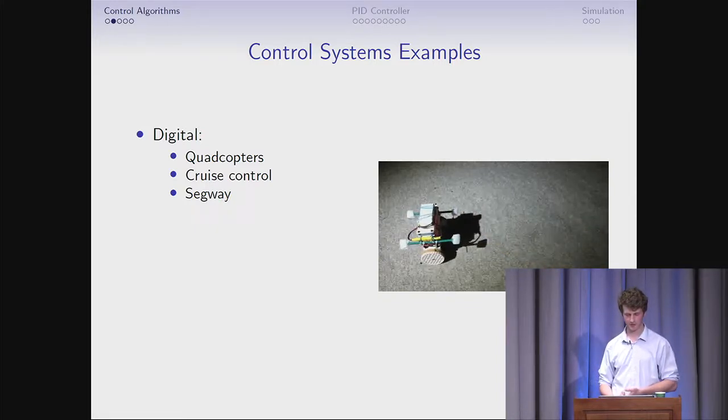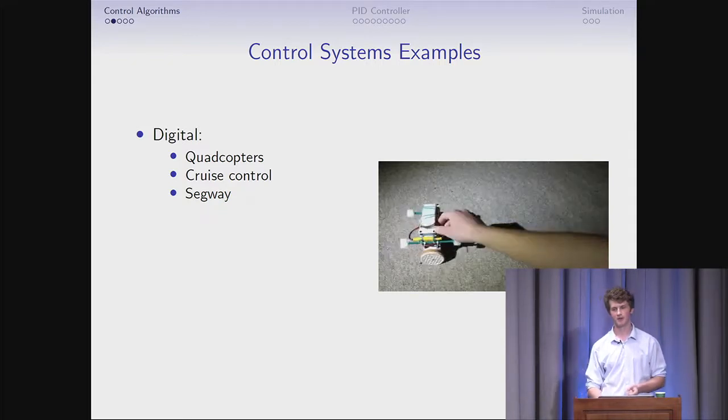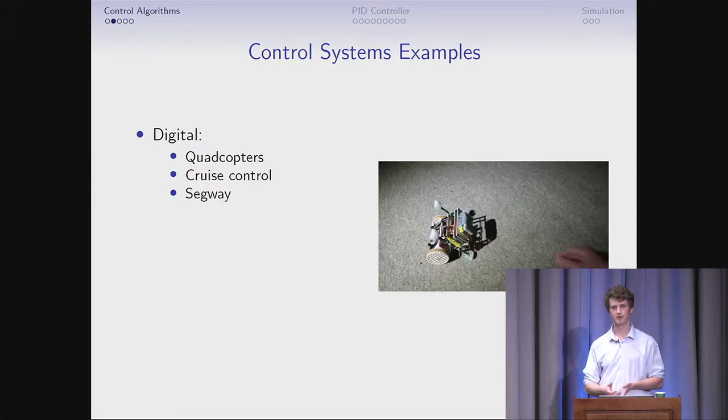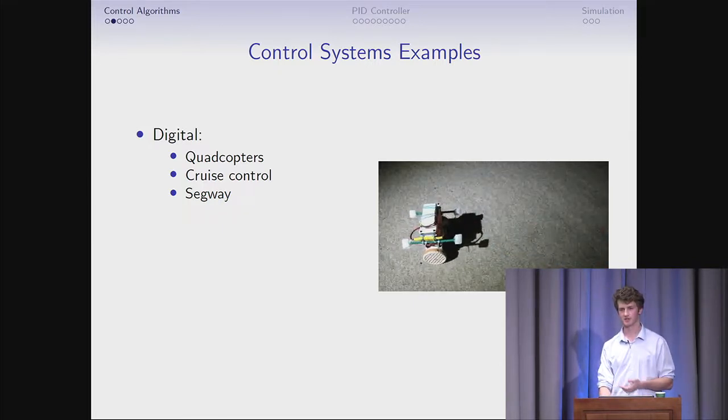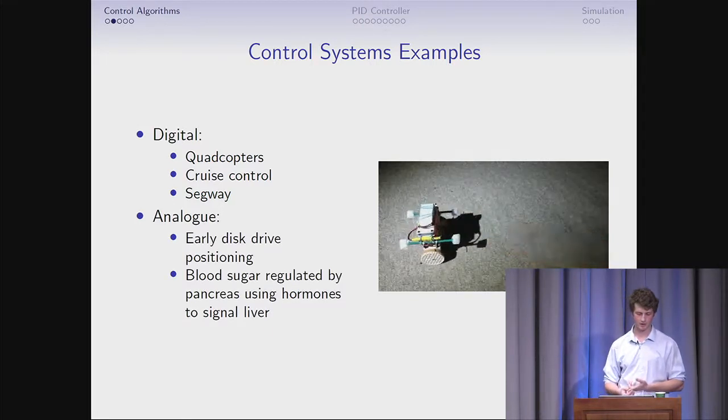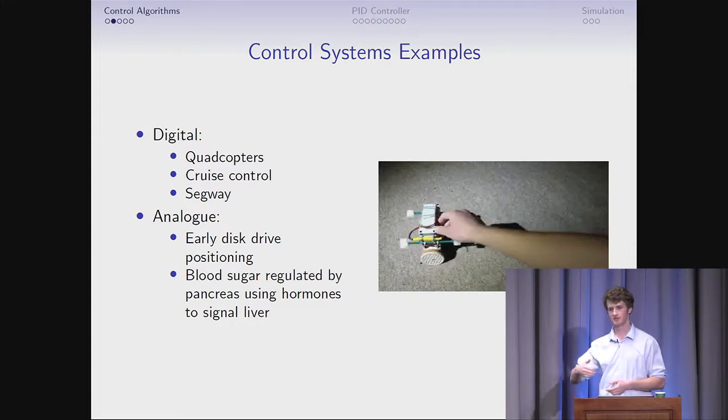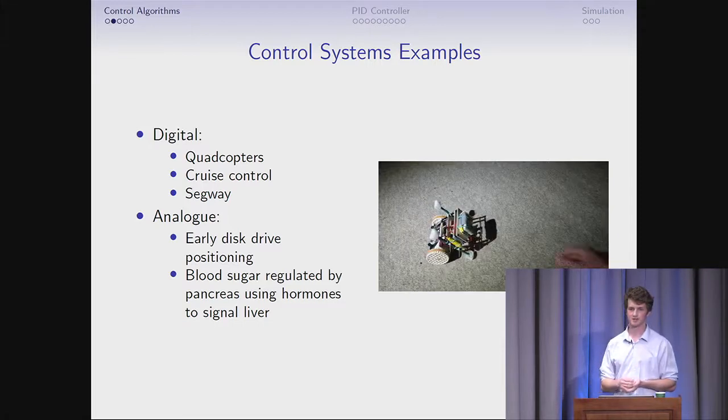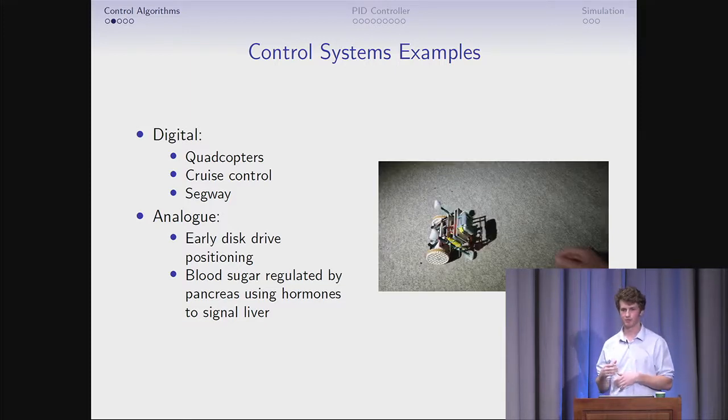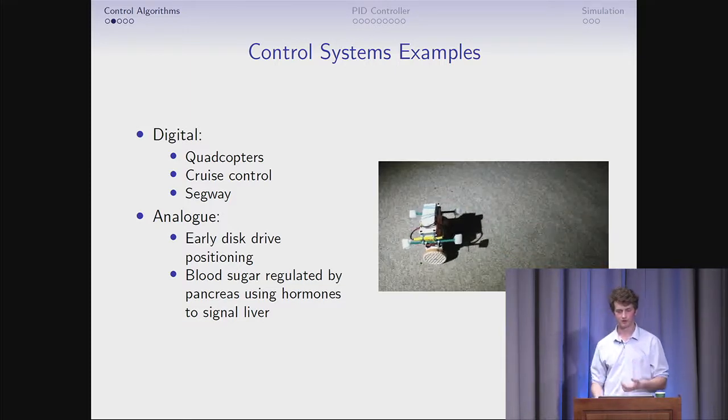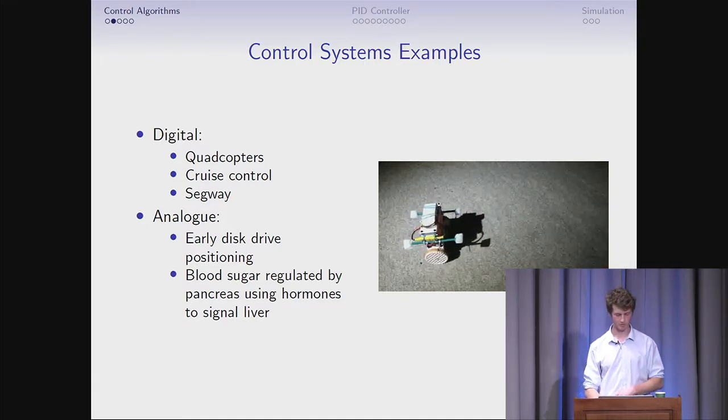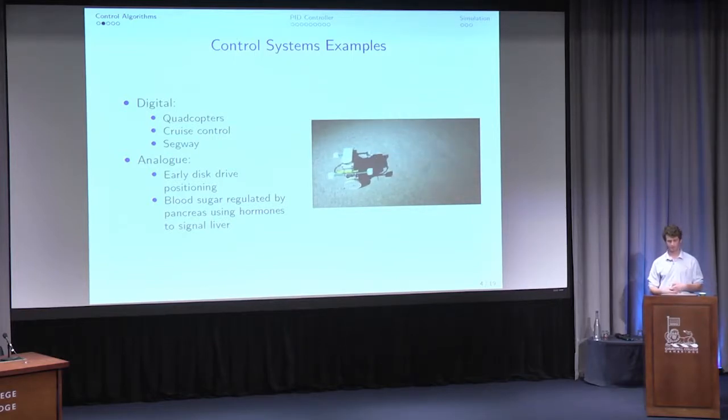Other examples are cruise control and segways, and all those are digital control systems. What that means is you use a microprocessor or FPGA to sample your system conditions and input, then perform calculations in a finite difference type of way. They can also be analog. Early disk drive positioning, the arm for your CD drive, would actually use a setup of capacitors, op amps, and inductors and perform all the calculations electronically. You can also think of the body where the pancreas is sensing your blood sugar and outputs a signal, which is some hormones, that tells the plant, which is your liver, do we need to increase or decrease blood sugar?